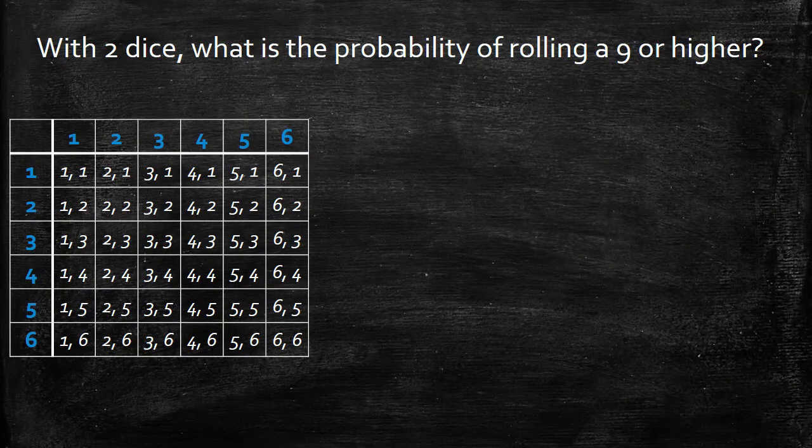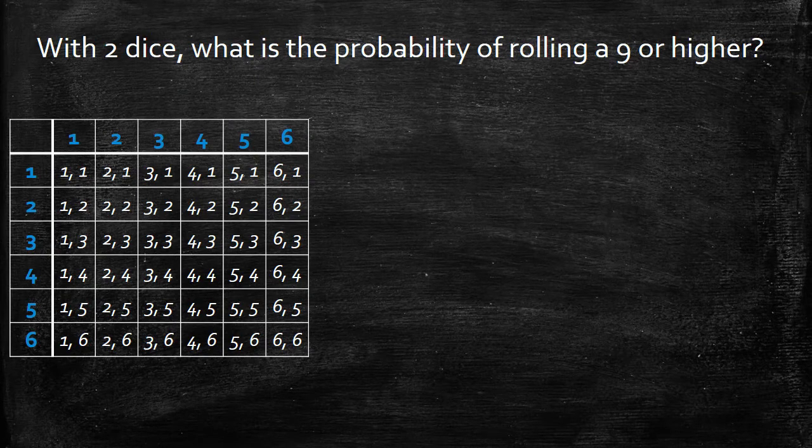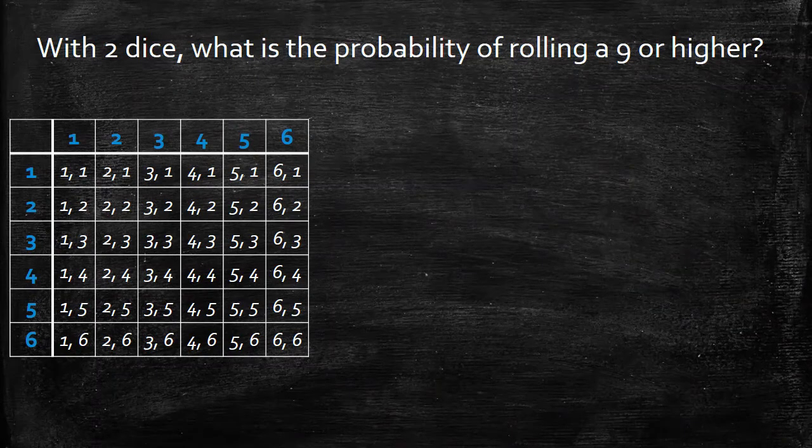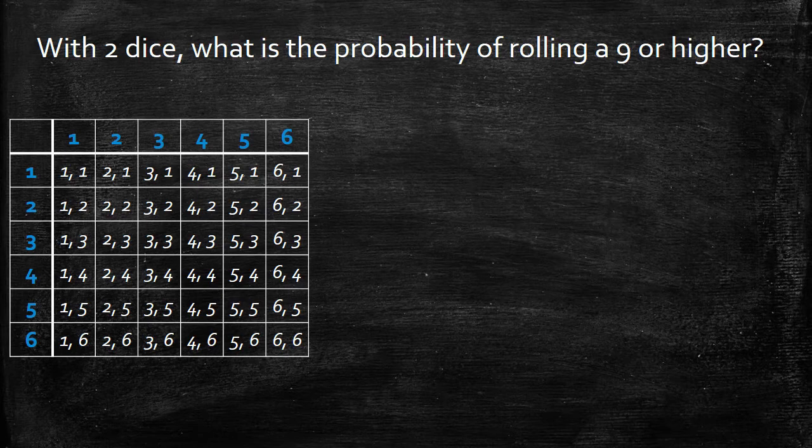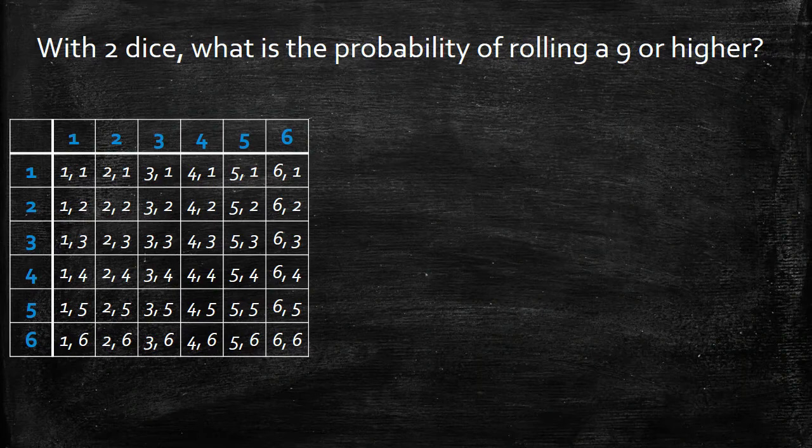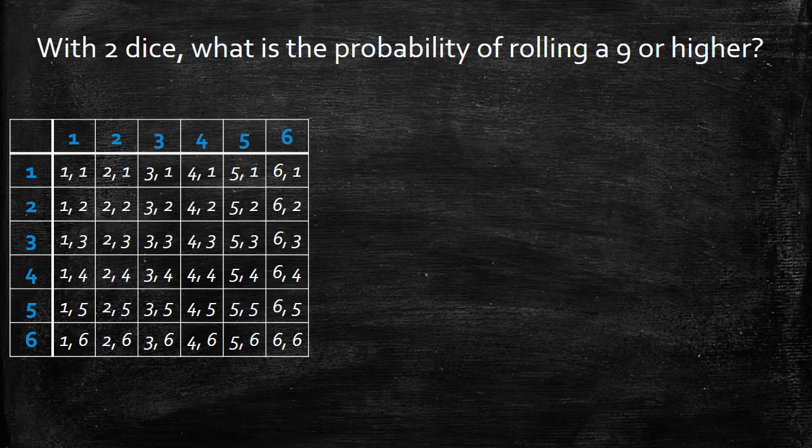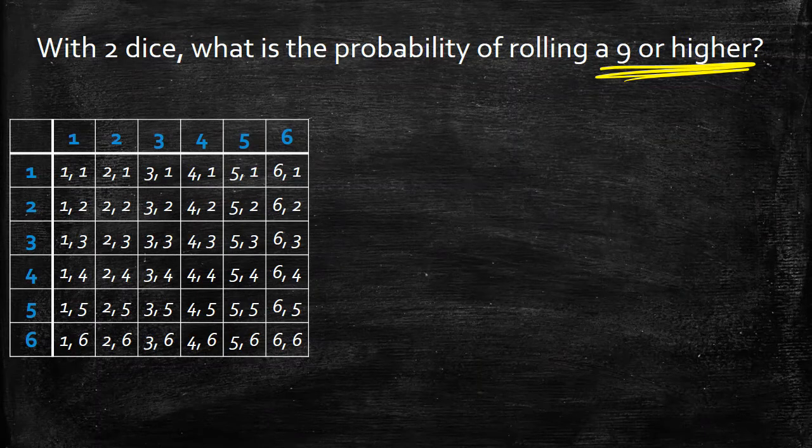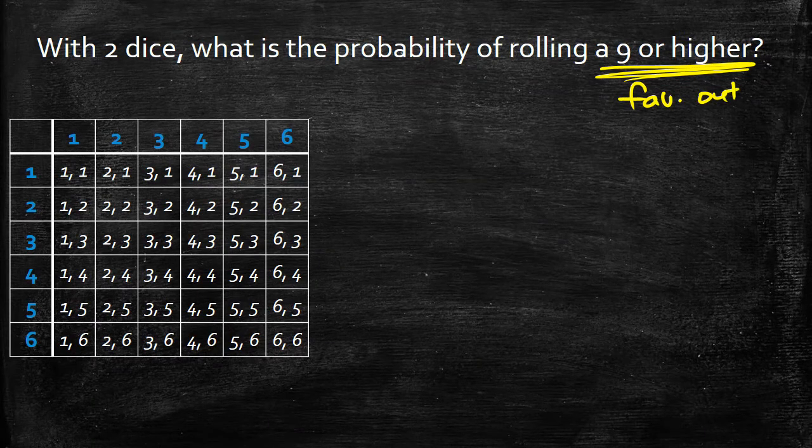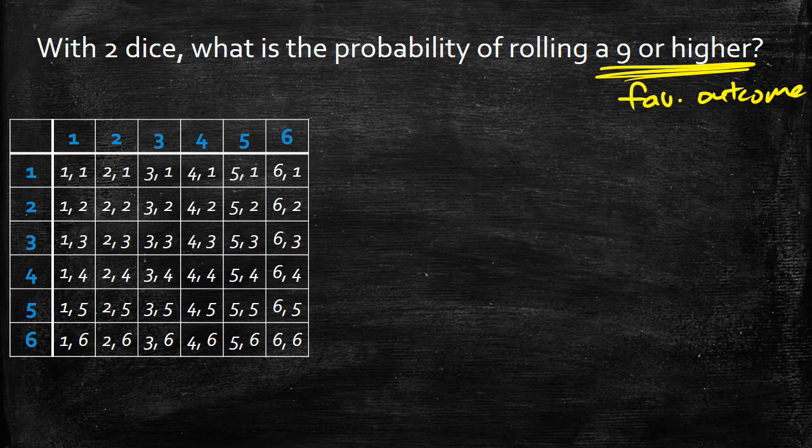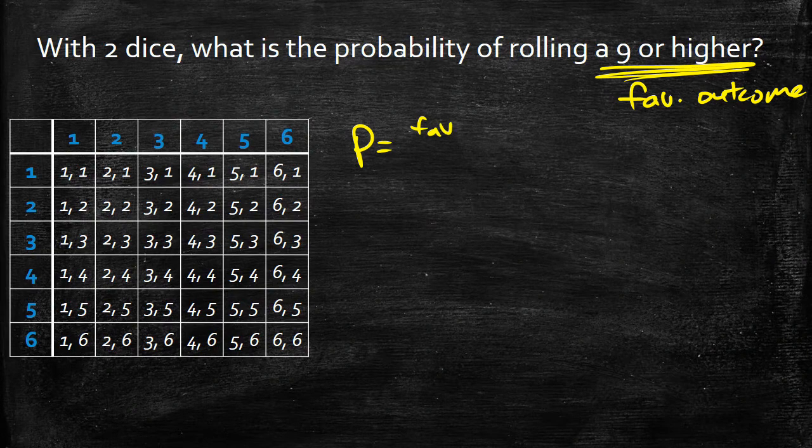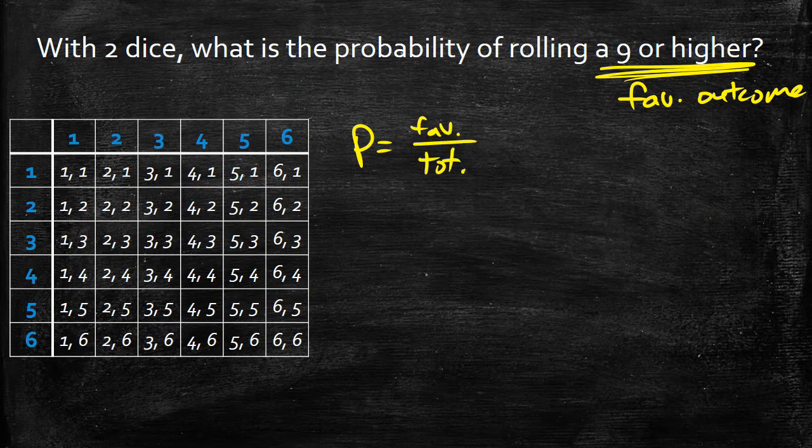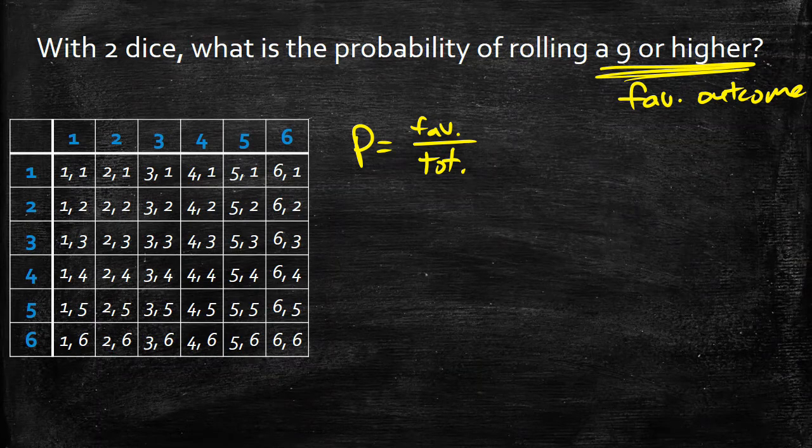So we know how to make a probability table. Now we need to look at how we can actually use it to find the probability or the likelihood of a certain event. I went ahead and cleaned up the probability table from the one I made before. What we're going to look at here is using two dice, what's the probability, the likelihood of rolling a nine or higher. So the nine or higher would be our favorable outcome. This is the one that we care about. If you remember, the equation to define probability is our probability equals our favorable outcomes divided by our total outcomes.